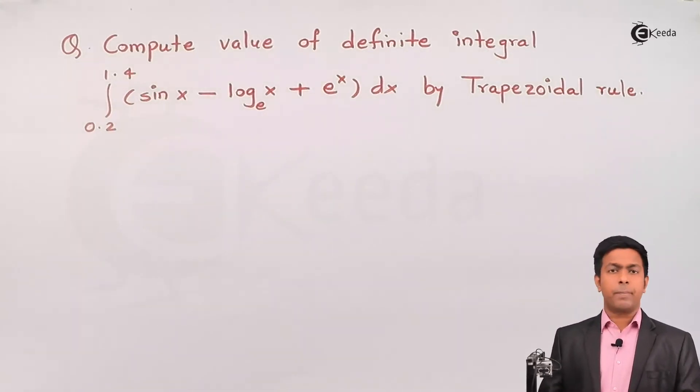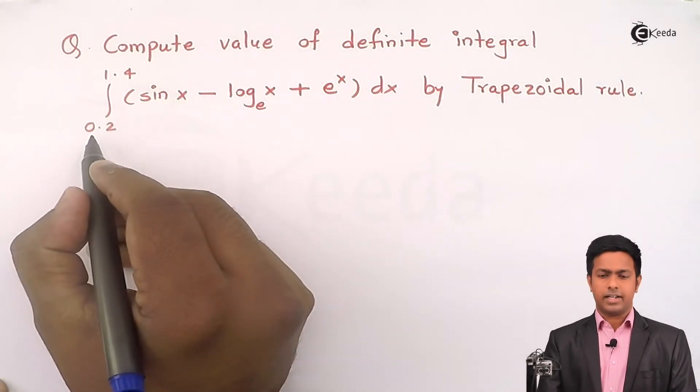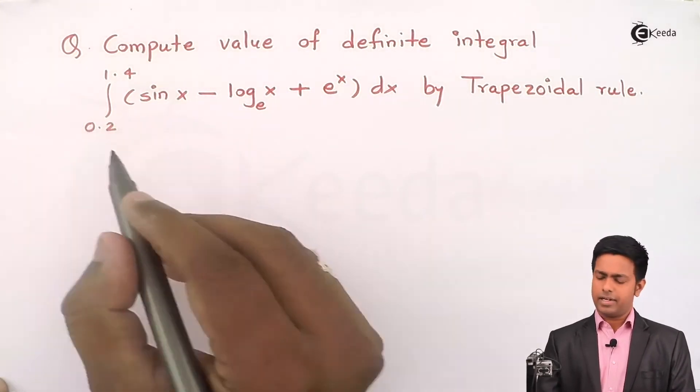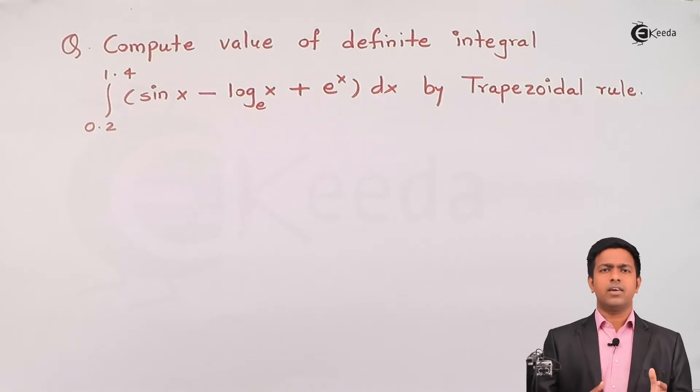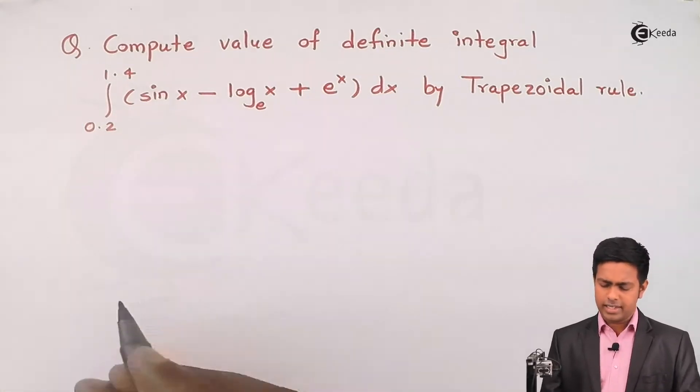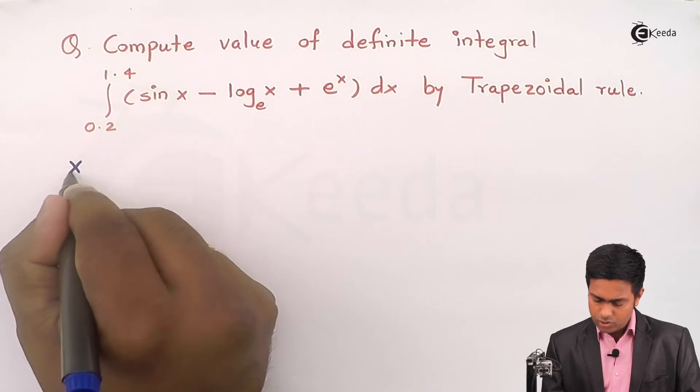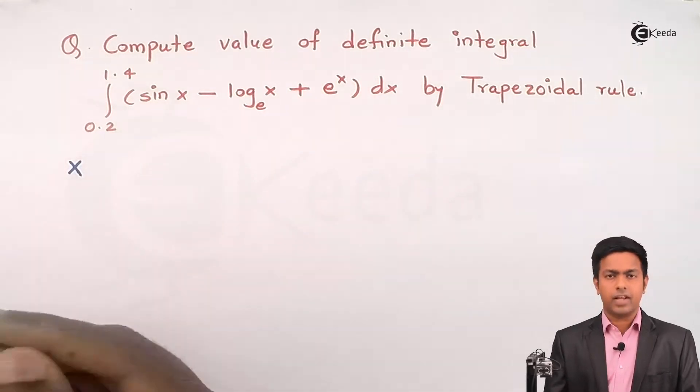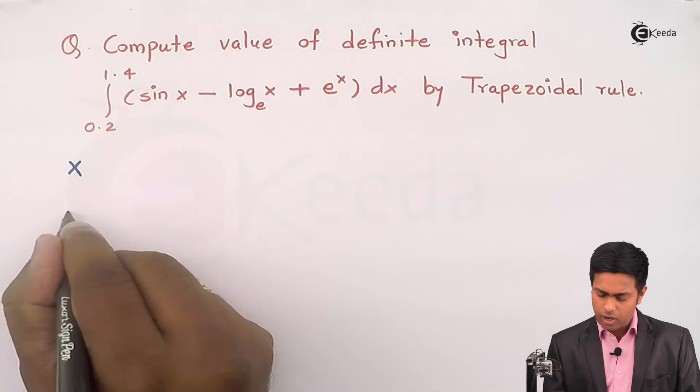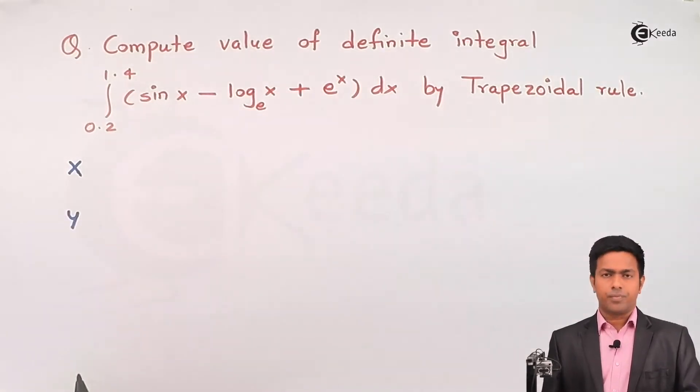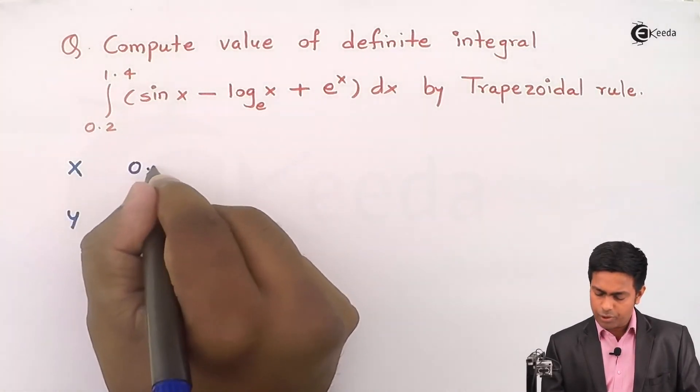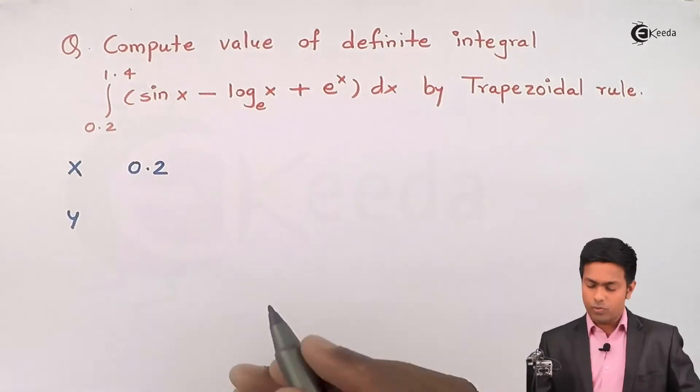So here for that I'll prepare a table where I'll start that table with 0.2 and it will end with 1.4. For simplicity or for the calculation we will take a difference of 0.2 between any two intervals or any two values of x. So let's say this is values of x and for that we are getting the corresponding value of y, and y is nothing but this function f(x). Let's say first value of x is 0.2, with the difference of 0.2 we'll get...